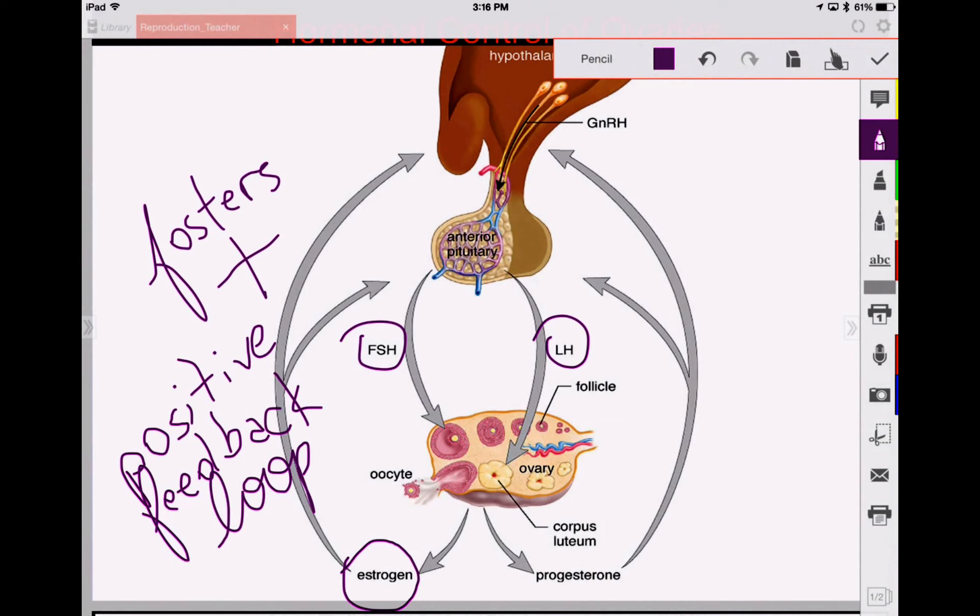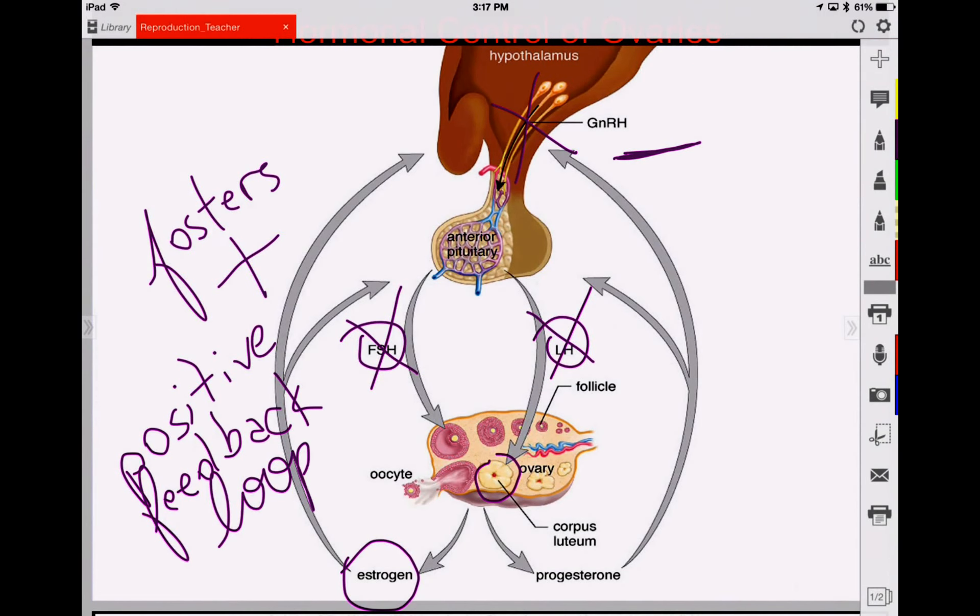Once the egg is released, though, and we get the corpus luteum, this has a negative effect on the hypothalamus, cutting off the release of gonadotropic-releasing hormone, which cuts off the production of this, so that another egg can't advance. And that kind of makes sense. Another egg shouldn't advance. This one hasn't finished what it's doing. Now, if the egg is fertilized, if the egg does get fertilized and implants on the uterine wall, it will secrete hormonal levels that will keep it in place. The placenta will keep another egg from developing.